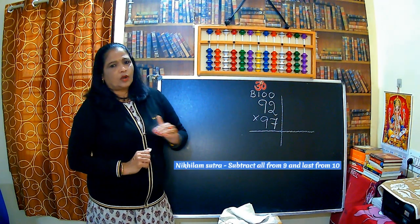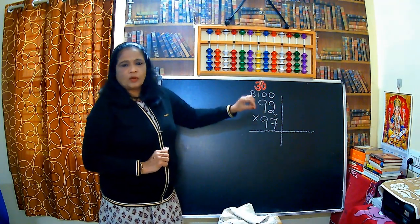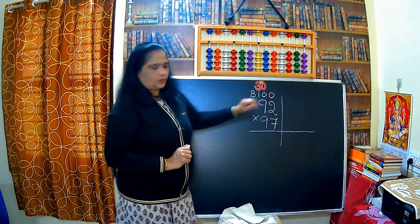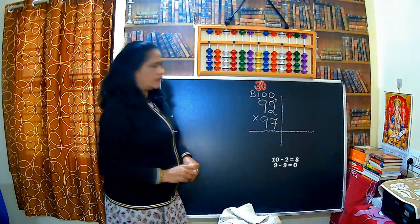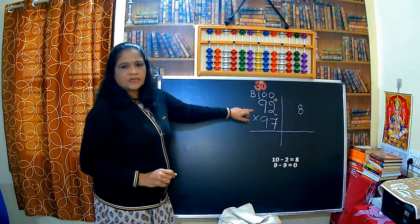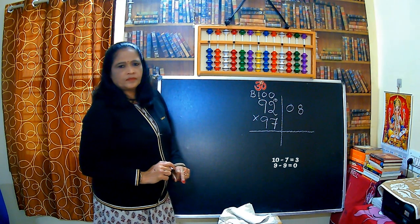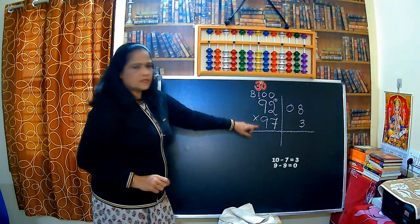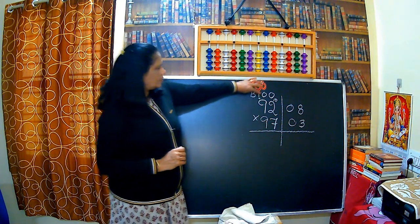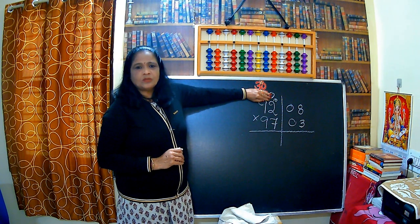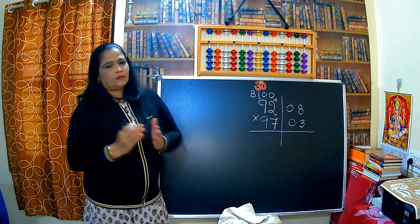What is Nikhilam Sutra? Subtract all from 9 and last from 10. The given number is 92. We subtract all the digits by 9 except the last digit, which is subtracted from 10. So 10 minus 2 gives 8, and 9 minus 9 gives 0. And the same for 97: 10 minus 7 is 3, and 9 minus 9 is 0. Notice we have not used 100 at all — no carrying, no borrowing in this method.